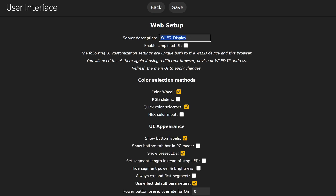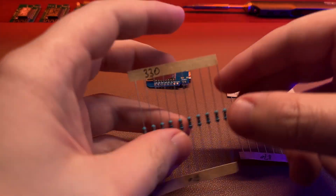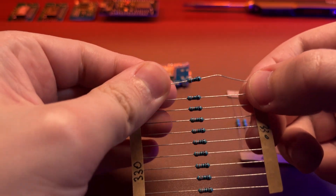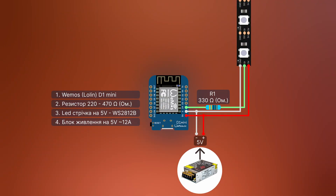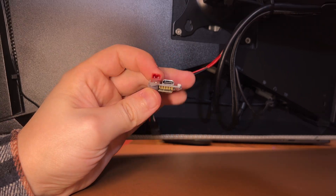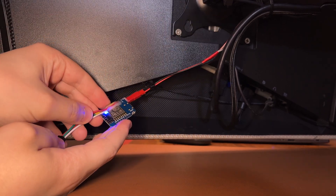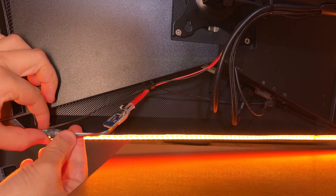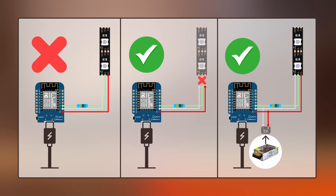В User Interface можна назвати нашу плату. З налаштуваннями закінчили – тепер час попрацювати паяльником. Схема дуже проста: потрібно припаяти резистор від 220 до 470 Ом до плати та під'єднати всі необхідні провода. Я обрав 330 Ом – він потрібен для стабільного сигналу і захисту плати від стрибків струму. Я використав конектор з комплекту – так акуратніше і простіше в обслуговуванні. Увага: не підключайте USB, якщо стрічка вже під'єднана до плати – без окремого живлення це може спалити порт або саму плату.